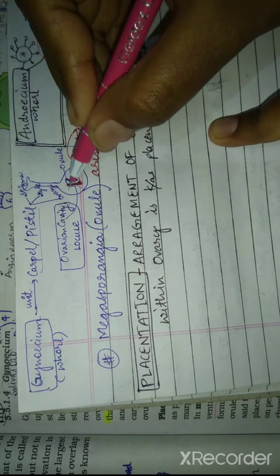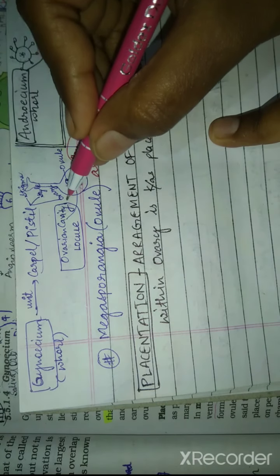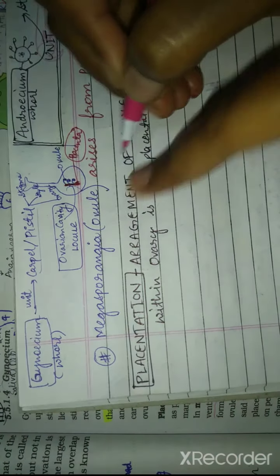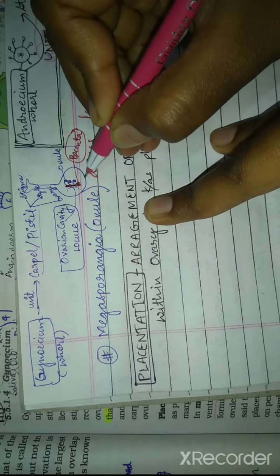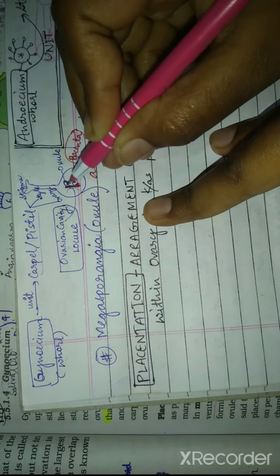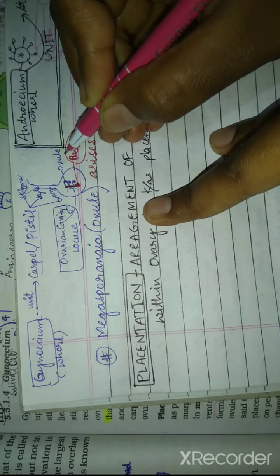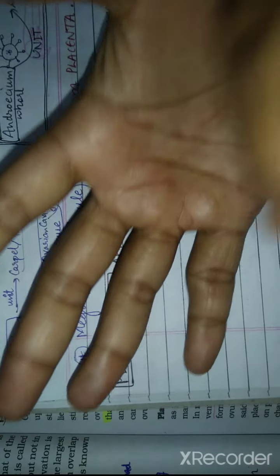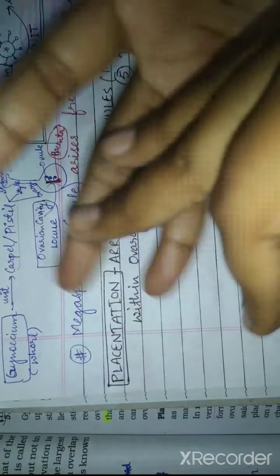Ovary has a cavity. We call it ovary cavity or locule. Inside the ovary cavity, the placenta is present. The placenta bears the ovules.